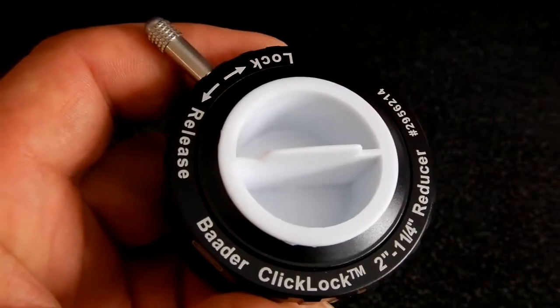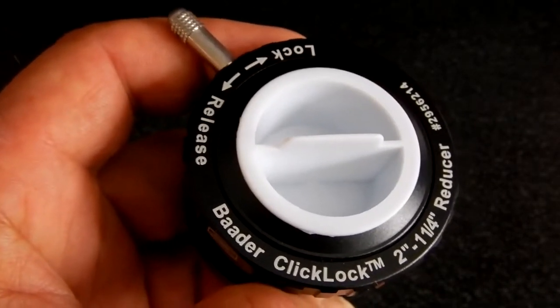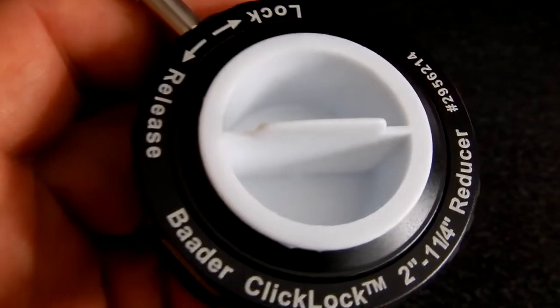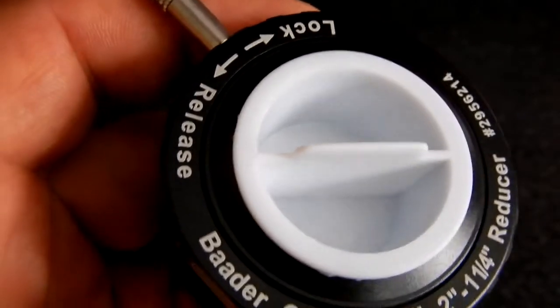Today I want to take a look at this Baader click-lock reducer. It goes from two inch to inch and a quarter, and it is item number 2956214.